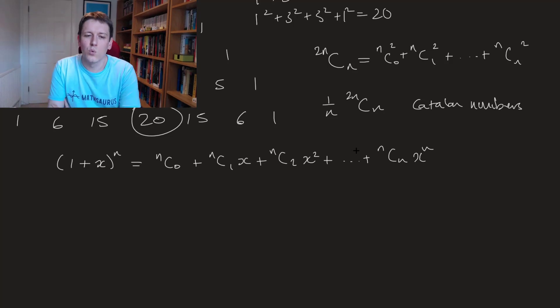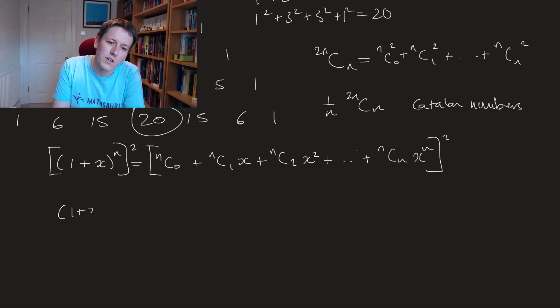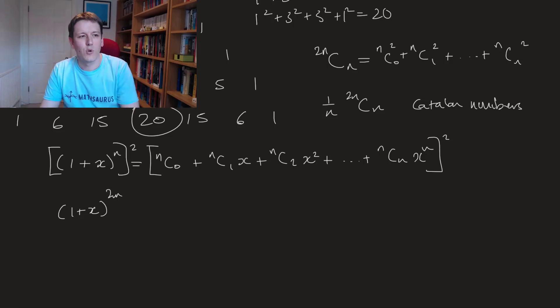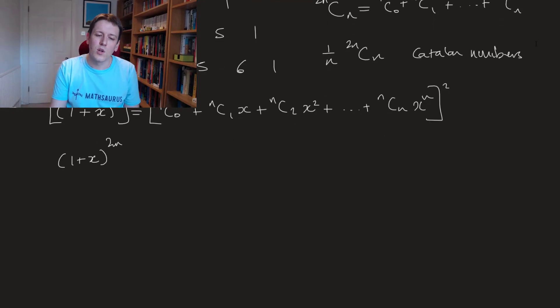Now what I want to do is to consider this squared okay so I'm going to square this whole expansion and that would give me 1 plus x to the 2n here. Now I don't want to multiply out this whole expansion.